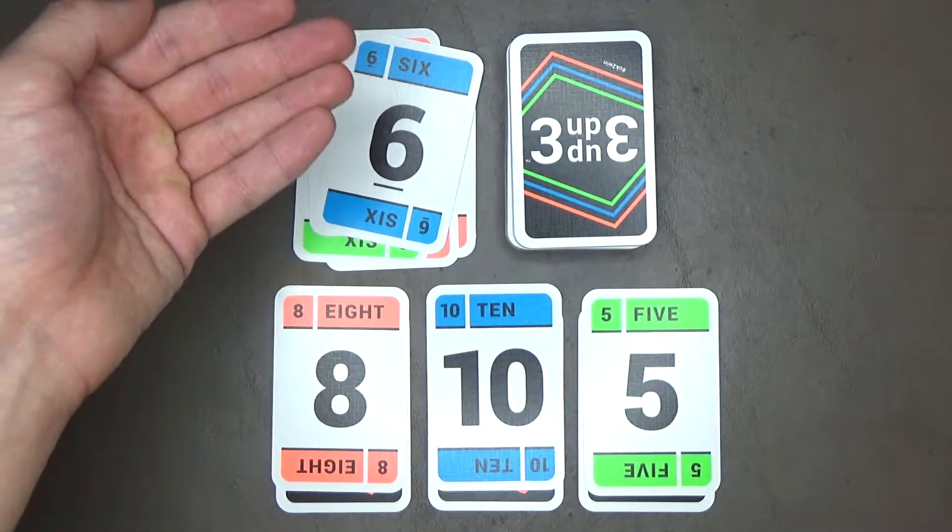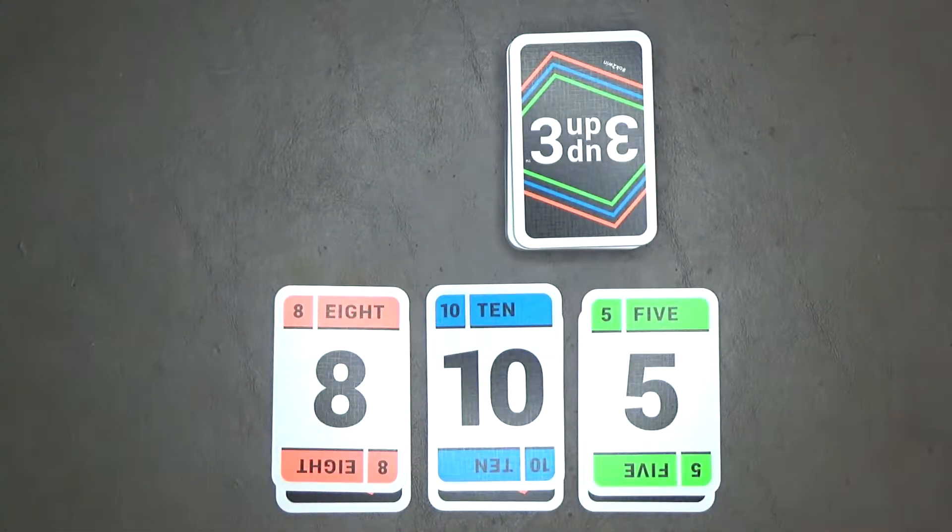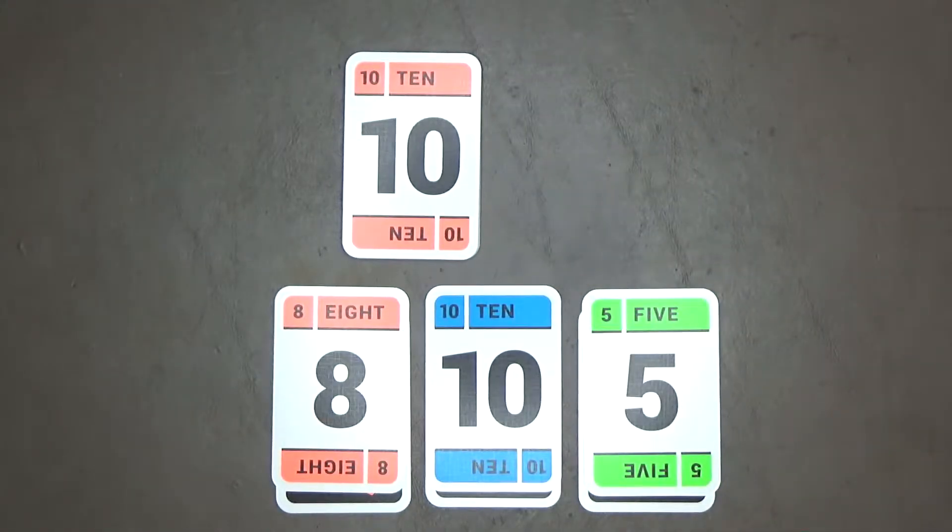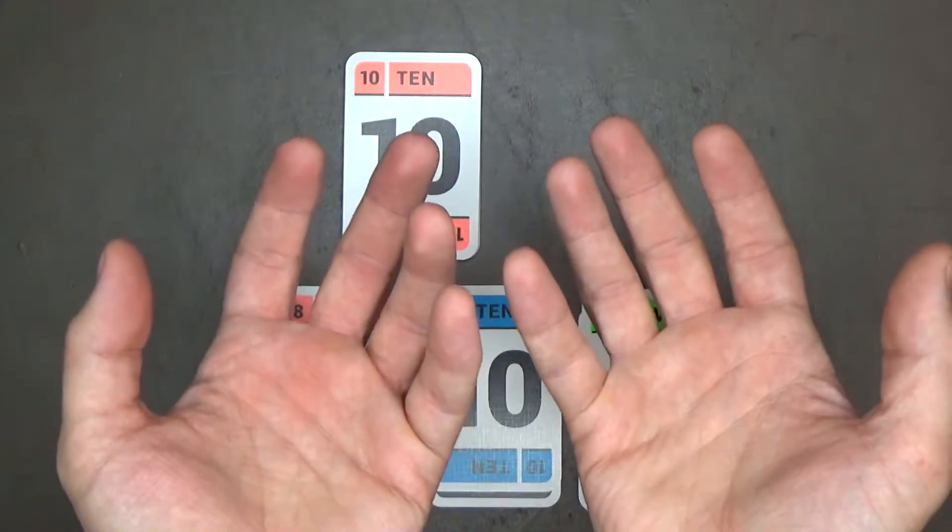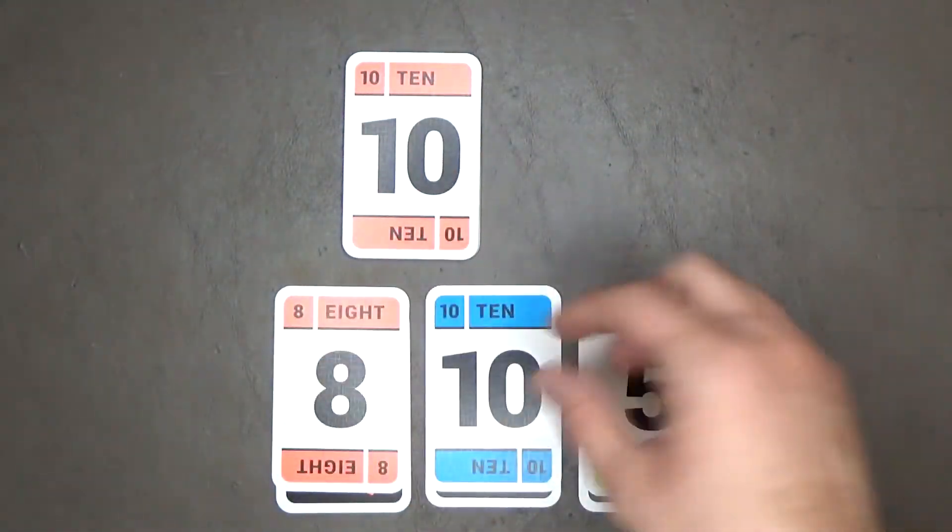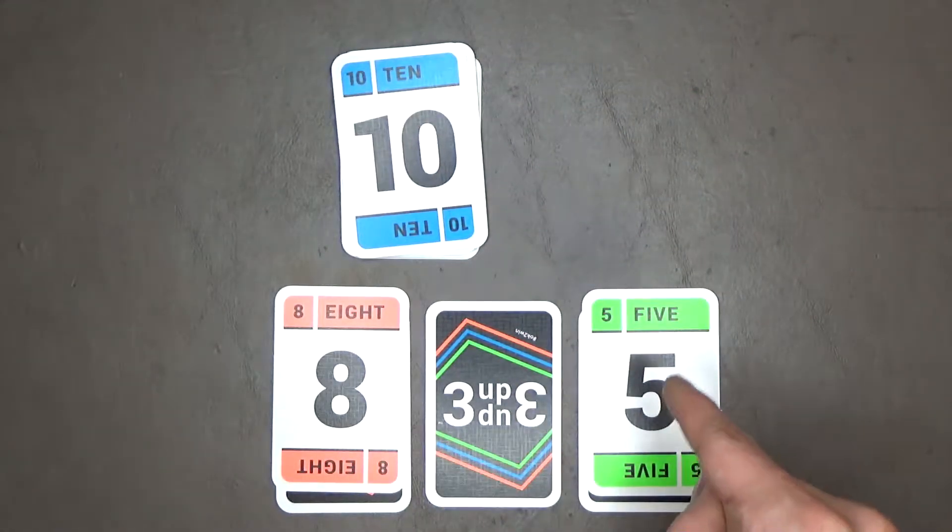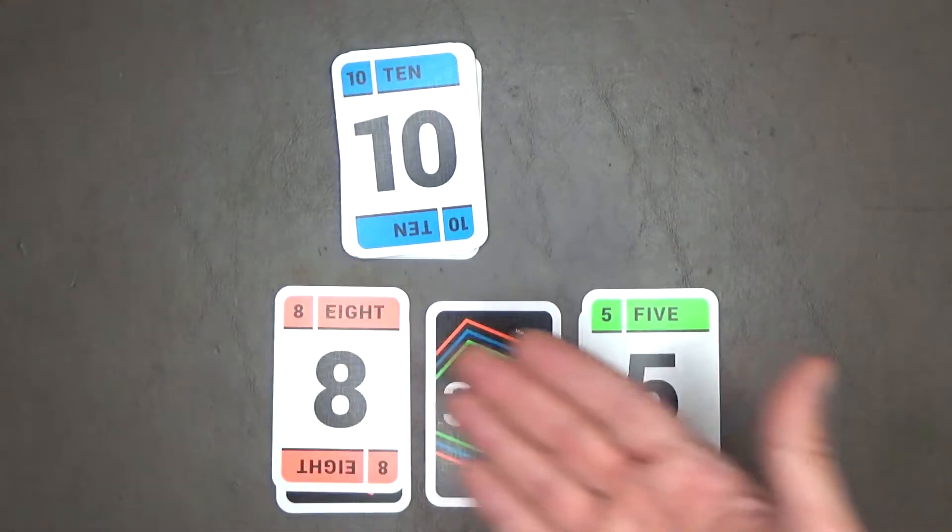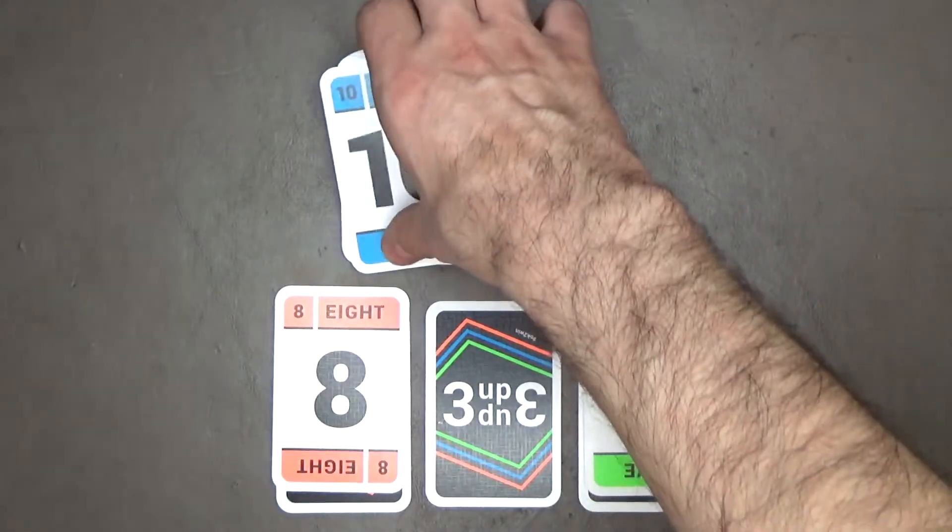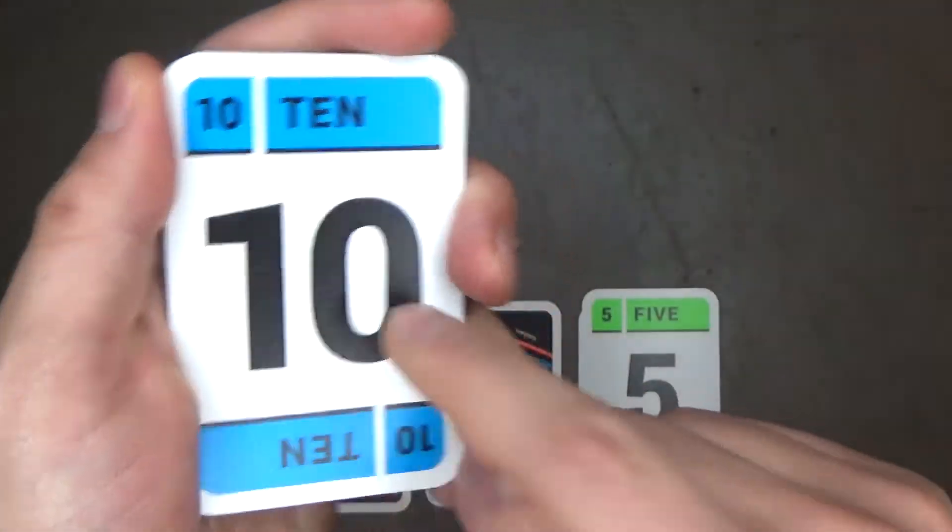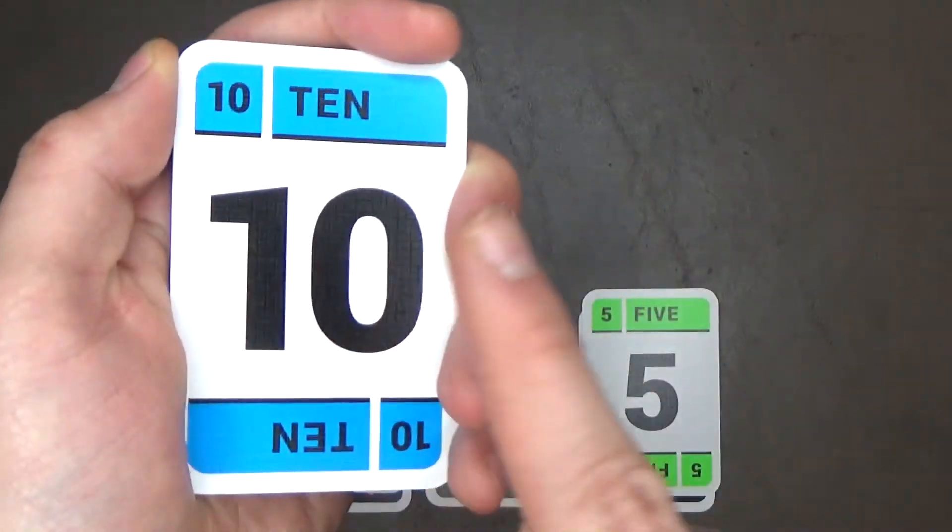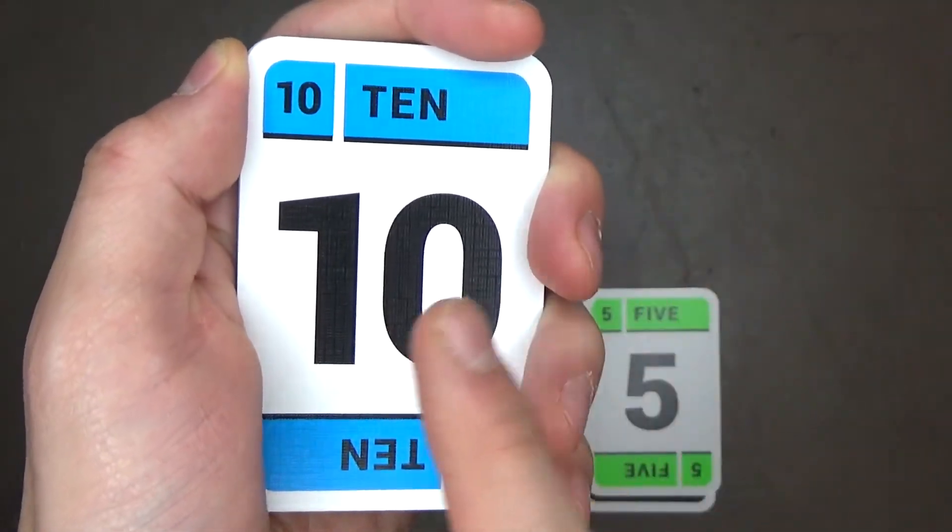The game continues until the draw pile goes empty and then simply all the players keep playing from their hands. On your turn, when the draw pile is gone and you have no cards left in your hand, you can start playing from your face up pile in front of you. You cannot play any of your face down cards until all 3 of your face up cards are played first. And on your turn, if you can't play any of your face up cards, take all the cards from the discard pile and add them to your hand. And you can't play any more of your face up cards until all the cards from your hand are played first.